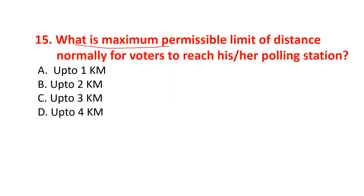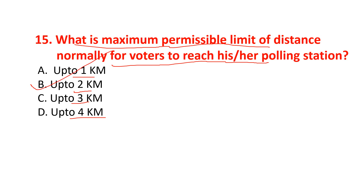What is the maximum permissible limit of distance normally for voters to reach their polling station? Options are up to 1 km, up to 2 km, up to 3 km, or up to 4 km. The correct option is option B — up to 2 km.